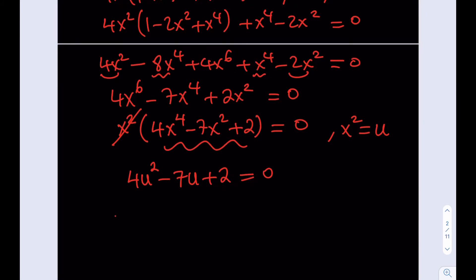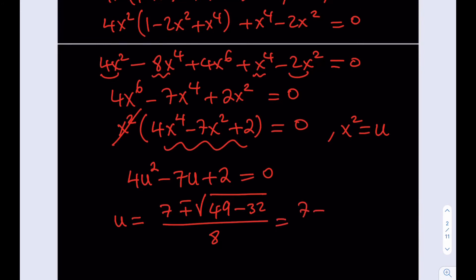We can now solve the quadratic using the quadratic formula. With a = 4, b = −7, c = 2: u = (7 ± √(49 − 32)) / 8 = (7 ± √17) / 8. Both solutions are positive since 7 > √17, so both are valid candidates for u = x².